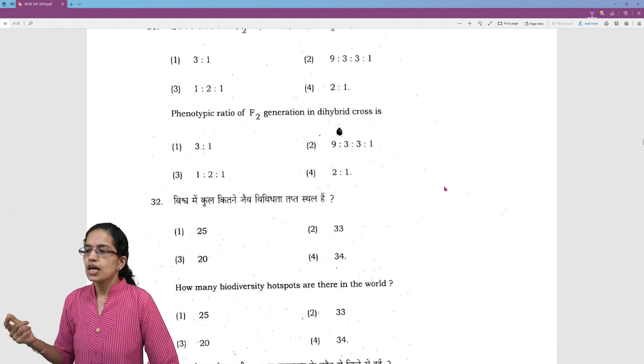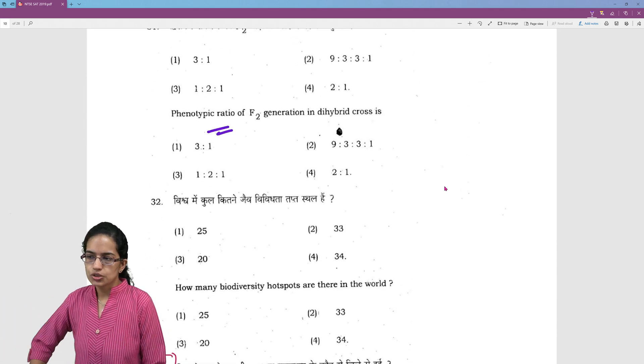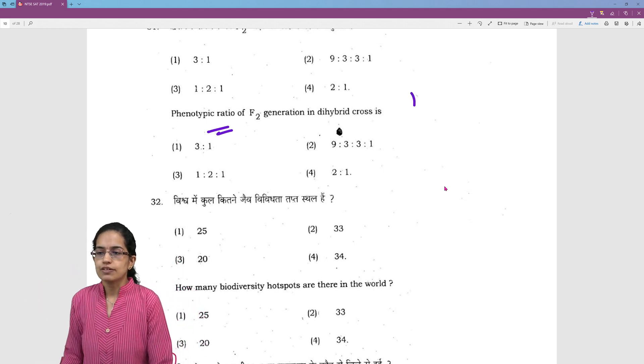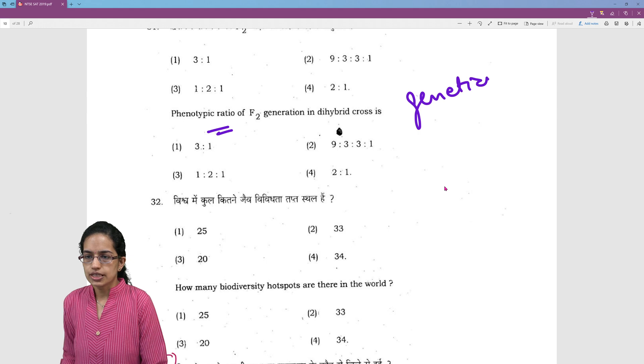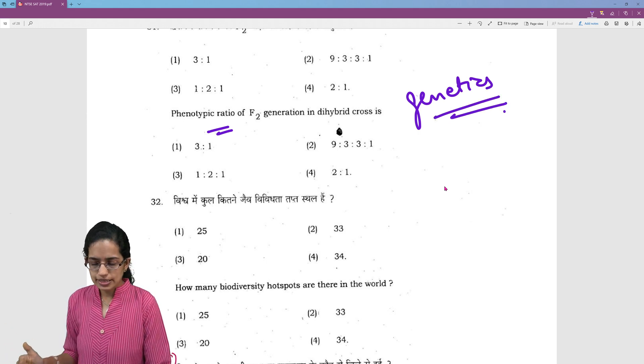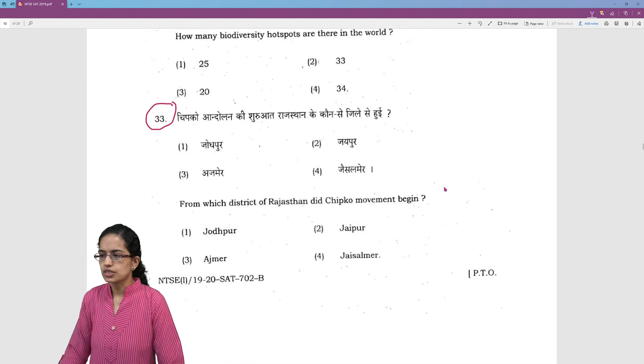about the progenies and the phenotypic and the genotypic ratios in the F1, F2 generation. So again this is something that we have covered in our classes on genetics in class 9th in detail. So just go back and refer the Mendel's law in our NCERT class 9th and 10th that we have discussed.